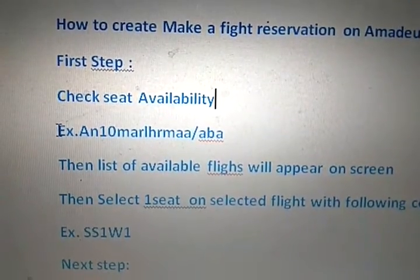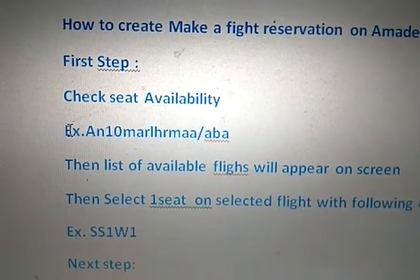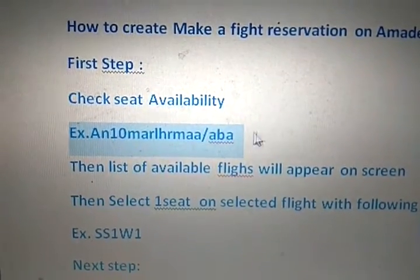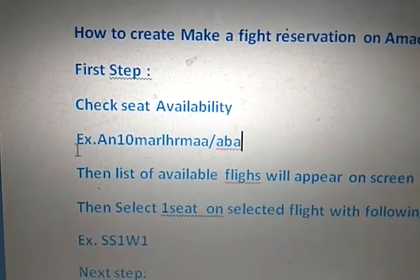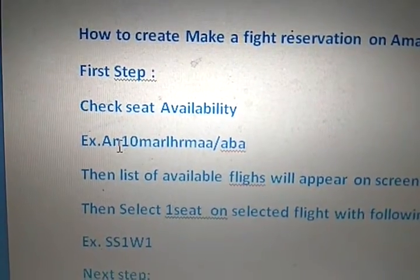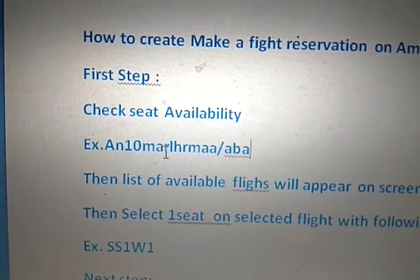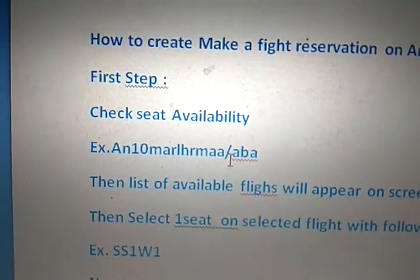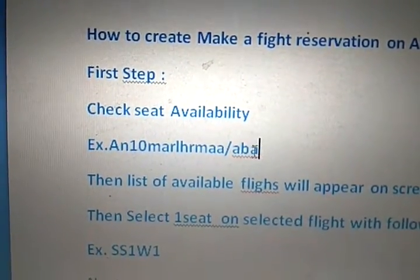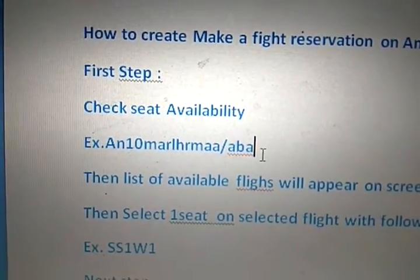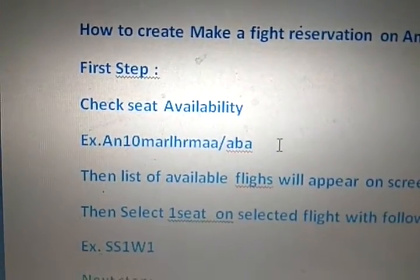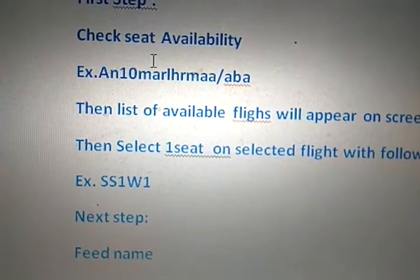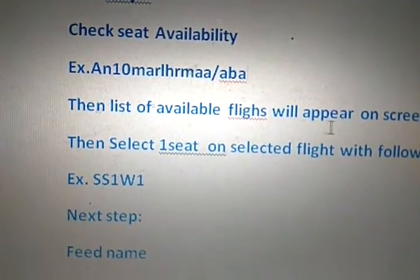For example, enter this entry on your Amadeus CRS: 'A' then 10th March — '10th' is the default command for date of travel — and the sector where you want to travel, for example London to Chennai, then slash on which flight you want to travel. For example, I have entered British Airways slash BA. Then a list of available flights will appear on the screen once you enter the availability entry.